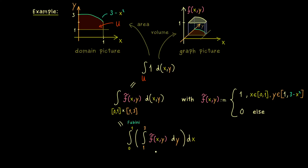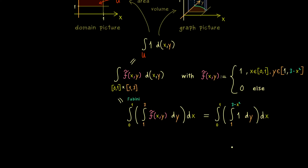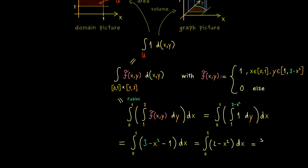Looking at the one-dimensional integral in the middle, the function we integrate is 0 whenever y does not lie in the relevant interval, so we can write 1 instead of F tilde with 3 minus x squared as the upper boundary. This is a really easy integral to solve: it's just the upper limit minus the lower limit 1, which gives 3 minus x squared minus 1. What remains is one one-dimensional integral to solve — this is how Fubini works, step by step reducing to one-dimensional integrals. The final result is 5 thirds, which is the area of domain U.